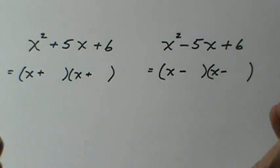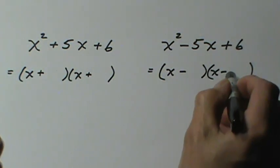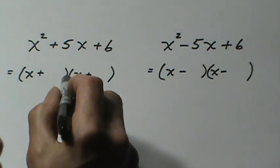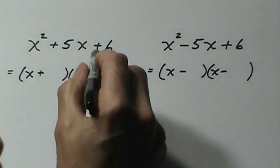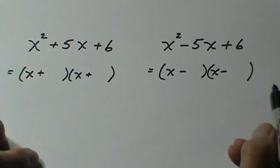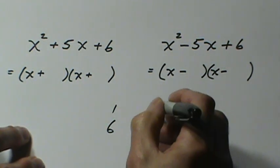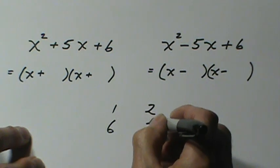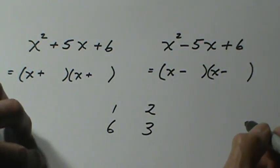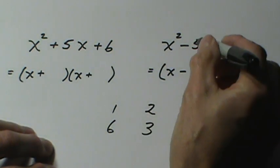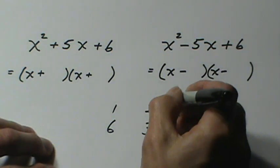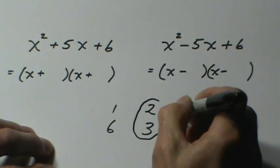Now what we need to do is find factors of six: one and six, two and three. And because the signs are the same we need a sum of five, so we select the two and the three.